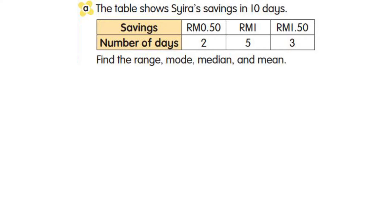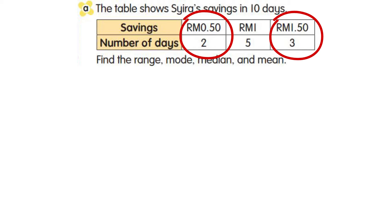Now look at example A. The table shows Shira's savings in 10 days. Find the range, mode, median and mean. To find the range, take the maximum value minus the minimum value.